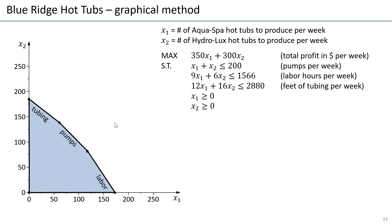Somewhere on this boundary there must be good solutions, because these are the solutions giving us high values of x1 and x2, and they offer different trade-offs: here we only produce aqua spas, and at the other extreme we only produce hydroluxes. Somewhere in between we choose a balance. In linear programming, you always have optimal solutions on the boundary, and at least one will always be at a corner point — like this point, or this point, or this point, or this point. If we evaluate those corner points, we get the following values.